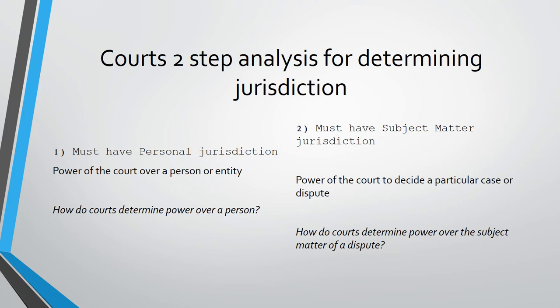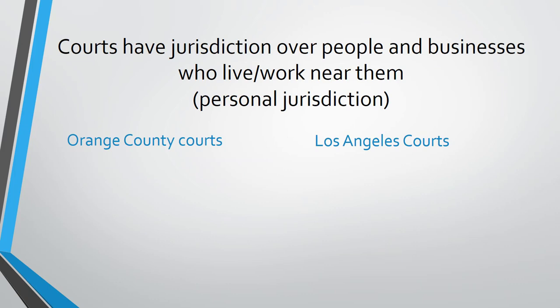The people in the dispute include a company — in this case Goodyear Tyre — and the parents of the deceased. We'll look at how courts determine if they have power over a person. Then there is subject matter jurisdiction: how does a court decide it has power over a dispute? In this case it's a defective tire, which is a product liability matter. It could also be a breach of contract, a criminal matter, or a family law matter.